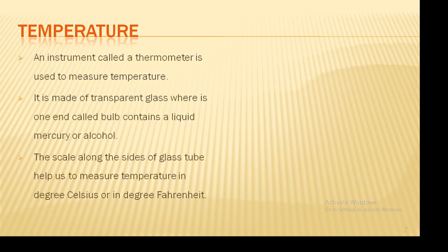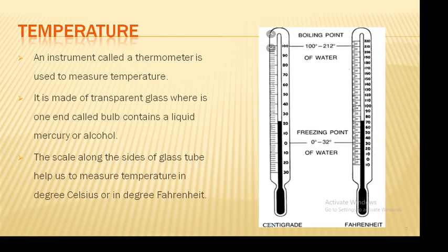Now, how can you measure temperature? An instrument called a thermometer is used to measure temperature. It is made of transparent glass where its one end, a closed bulb, contains a liquid — mercury or alcohol. The scale along the side of the glass tube helps to measure temperature in degrees Celsius or degrees Fahrenheit.